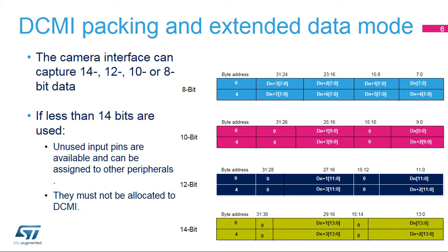Depending on the interface size — 8, 10, 12, or 14 bits — two or four data items are stored in a single 32-bit word. Once a complete 32-bit word is available, it is transferred by DMA to the memory. This allows us to reduce the bus bandwidth used by the DCMI, even for high-speed cases.